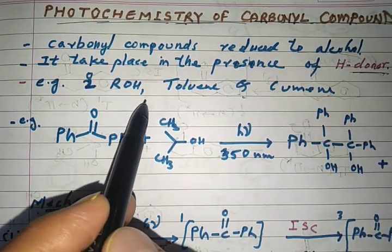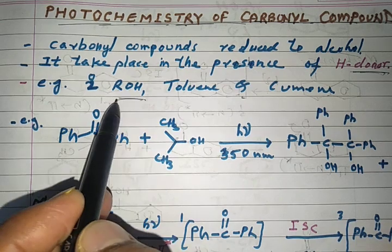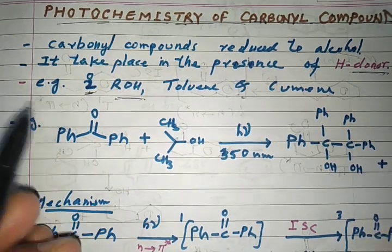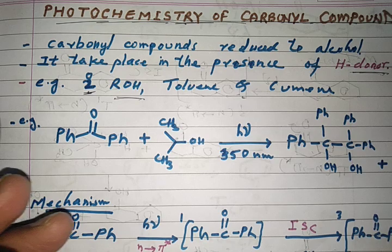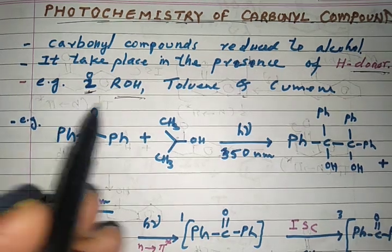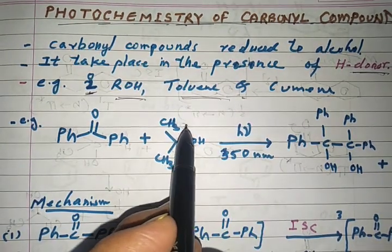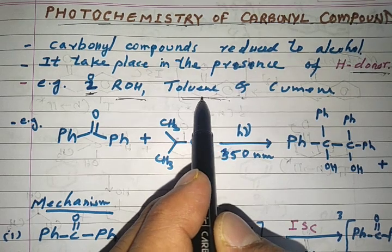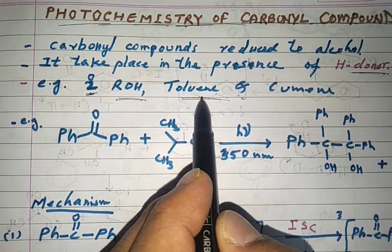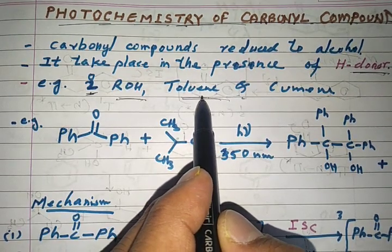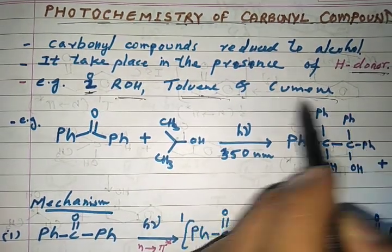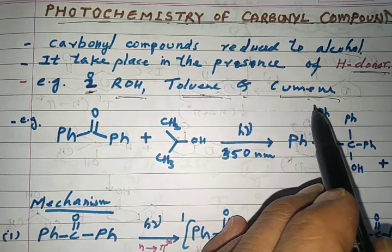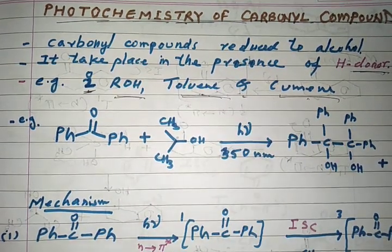Examples of hydrogen donors are alcohols — especially secondary alcohols like isopropyl alcohol, which we can use extensively. Toluene also acts as a hydrogen donor, so we can use toluene in the photochemical reaction of organic compounds. Cumin is also one of the hydrogen donors that can be used in photochemical reactions.